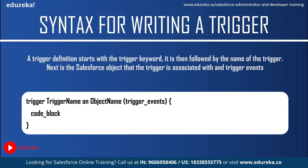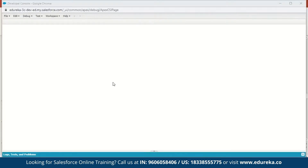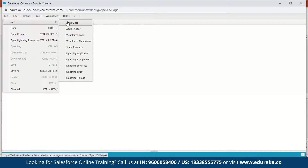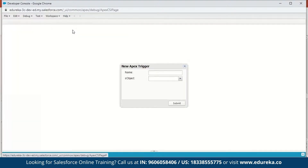Now let us execute a small demo to understand this better. We will fire a simple trigger before we insert an account and write a message to the debug log. So let me quickly switch to my developer console. Here I've signed into my Salesforce developer console. The first step is to click on File, go to New, and you have an option called Apex Trigger — just click on that.